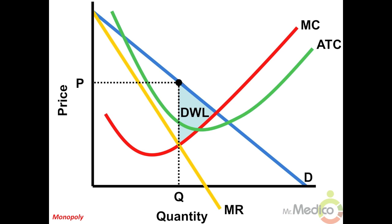A profit-maximizing monopolist is inefficient compared to a perfectly competitive market because the monopolist charges a higher price and produces less output. The term for inefficiency in economics is deadweight loss. Since the monopolist charges a price greater than its marginal cost, there is no allocative efficiency. Society loses the area between the perfectly competitive output level where D equals MC and the monopolist output.